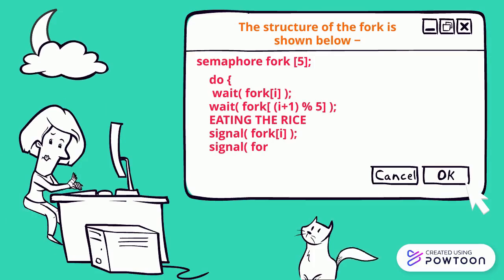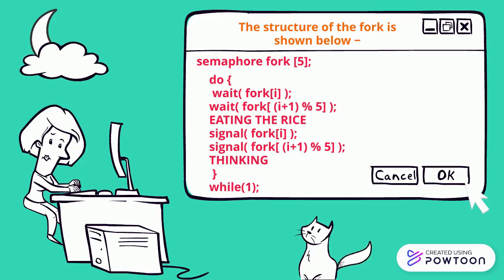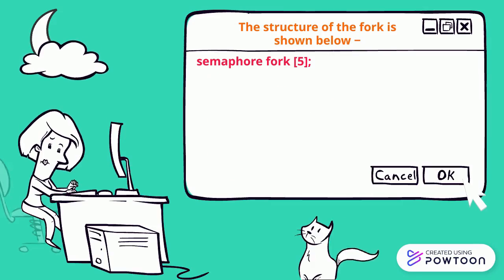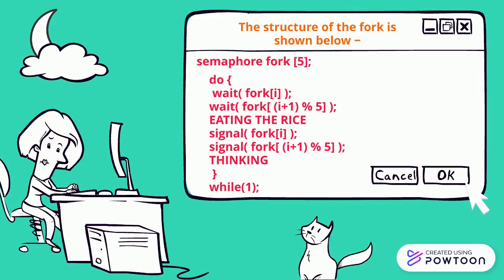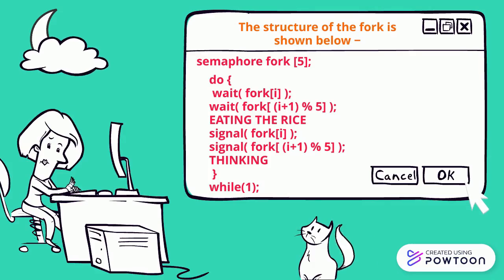Initially, the elements of the fork are initialized to one, as the forks are on the table and not picked up by a philosopher. The first wait operation is performed on fork i and fork i+1 mod 5. This means that philosopher i has picked up the forks on his sides. Then the eating function is performed.